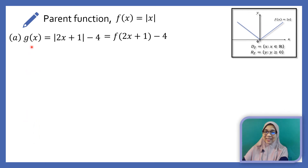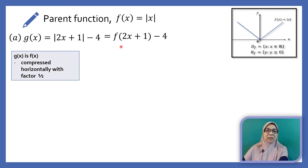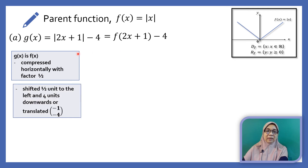Let's graph the function g(x) equals modulus of (2x plus 1) minus 4. We can rewrite this as f(2x plus 1) minus 4. The 2 in front of x indicates the graph is compressed horizontally with factor half. We equate 2x plus 1 to 0, giving x equals negative half — the graph is shifted half unit to the left. Minus 4 indicates we need to shift 4 units downwards, or carry out a translation of (negative ½, negative 4).